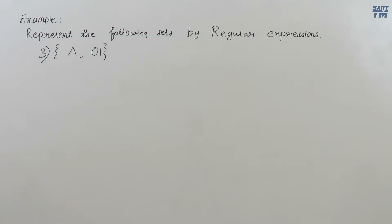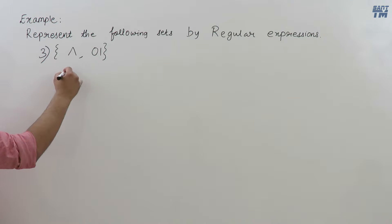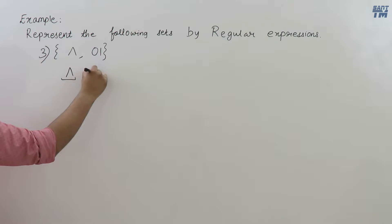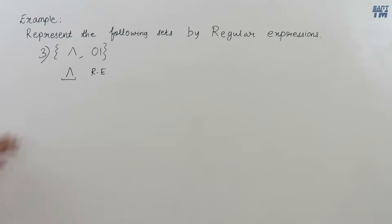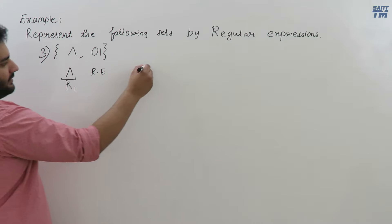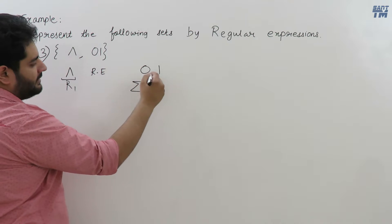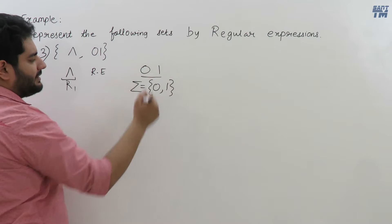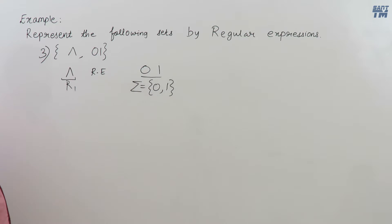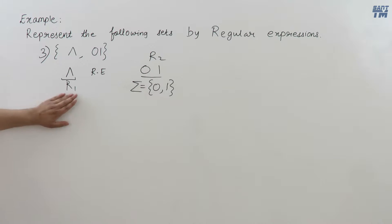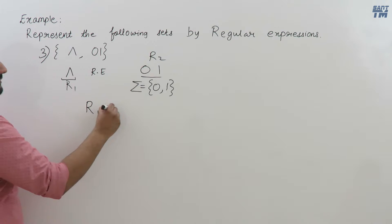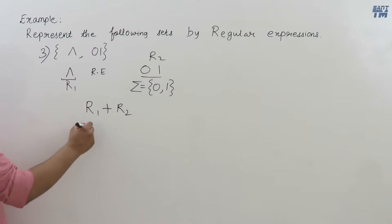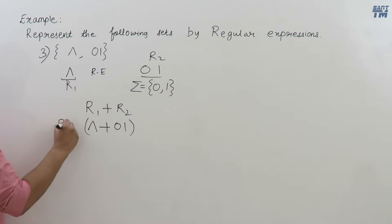Next example: we have the set {null, 01}. From the characteristics of regular expressions, null is a regular expression (R1) and 01 is a combination of terminals from the alphabet set {0,1}, so it is also a regular expression (R2). The set is the union of R1 and R2, giving the regular expression null+01.